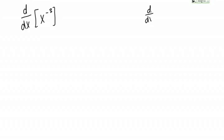In other words, we've learned so far how to take the derivative of things like x to the fifth, which would be 5x to the fourth.